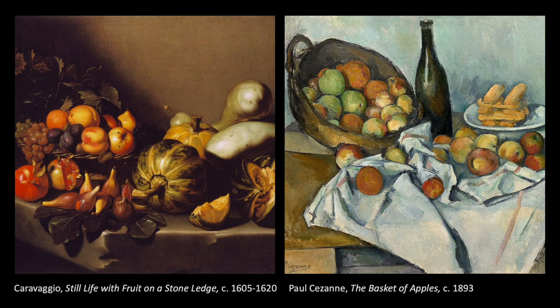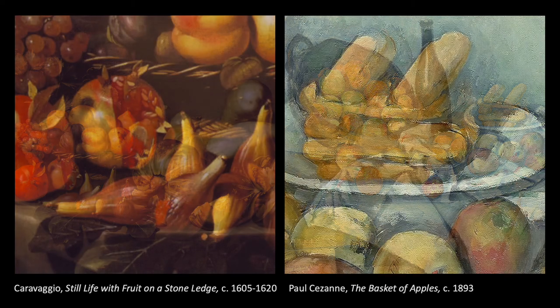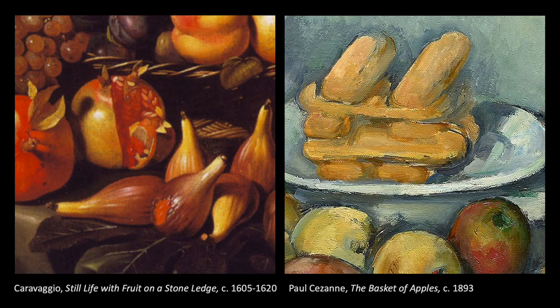Here are two traditional examples of the impact light sources can have on still lifes. Notice the strong contrast in shadows and highlights of Caravaggio's work on the left compared to the soft light and shadows of Suzanne's work on the right.